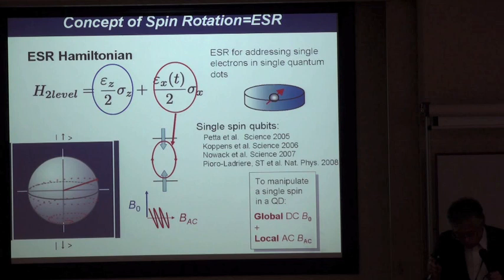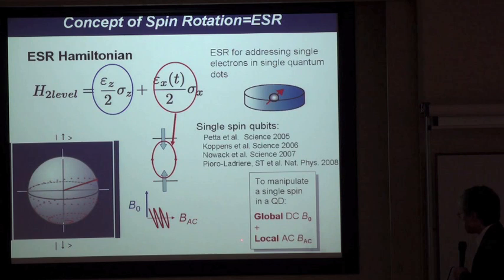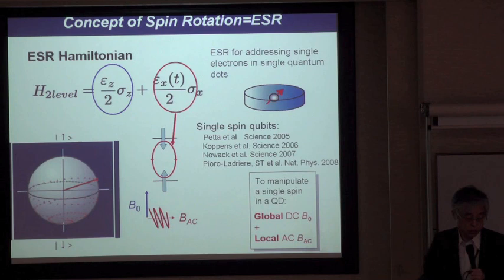However, to address just one electron spin in quantum dots, you cannot simply apply the standard electron spin resonance technique. You have to prepare an AC magnetic field very much localized to just one electron spin in the quantum dot. This AC field cannot be global, whereas the DC field can be global.